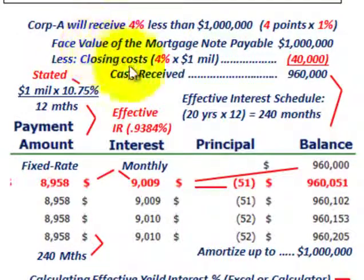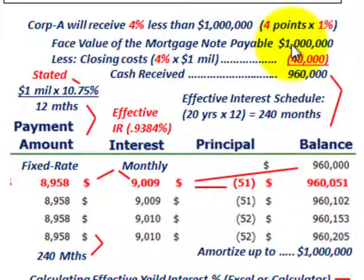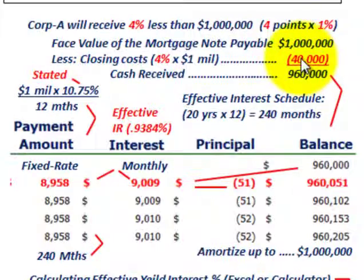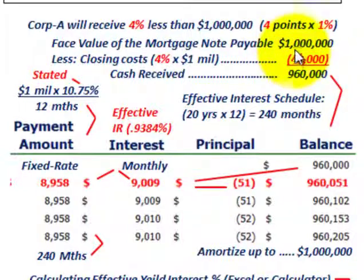To calculate the cash received: take the face value of the mortgage notes payable, which is $1 million — that's what Corporation A has to pay back. Then subtract the closing costs: four points, or 4% of $1 million, equals $40,000. So the cash Corporation A receives is the difference between the $1 million they must pay back and the $40,000 closing costs.